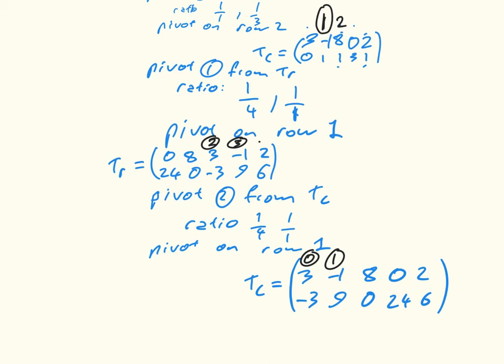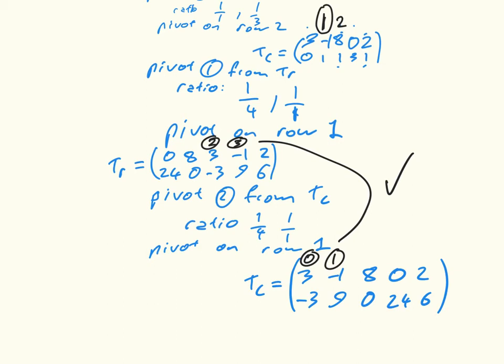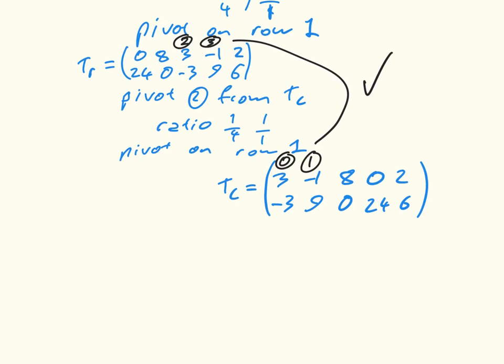And now I just need to read the vertex out of this pair of tableaus. I do that by setting the non-basic variables to be 0. And remember, these are slack variables.